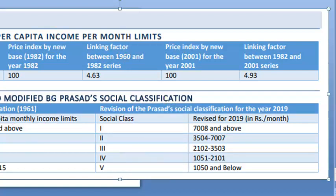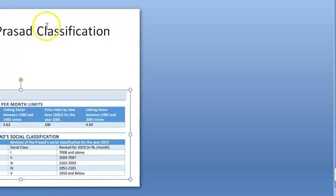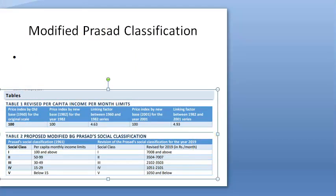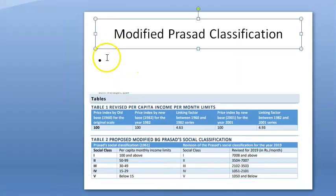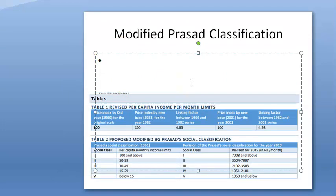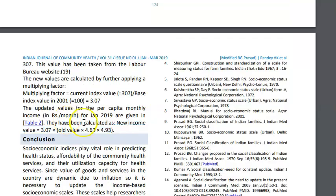Per capita family monthly income is the total monthly income of the family divided by the total number of members in the family. They then multiply it by the All India Consumer Price Index and additional correction factors. Earlier the formula used: old value × 4.63 × 4.93.